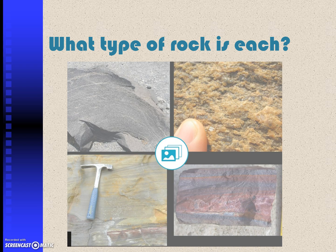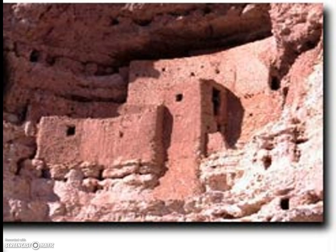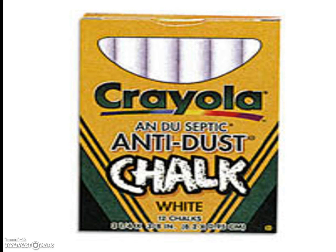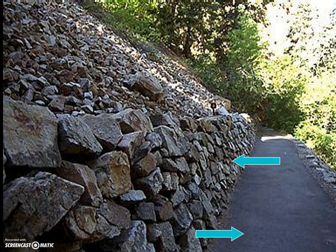Here are some pictures showing where rocks are actually used in real life. That dam is the Hoover Dam, used to control water so that rivers on the other side don't flood. We can also use rocks for housing, pottery, buildings, monuments, chalk, and weapons — that's also what people in ancient times used. We can also use them for walls and even walking pavement.